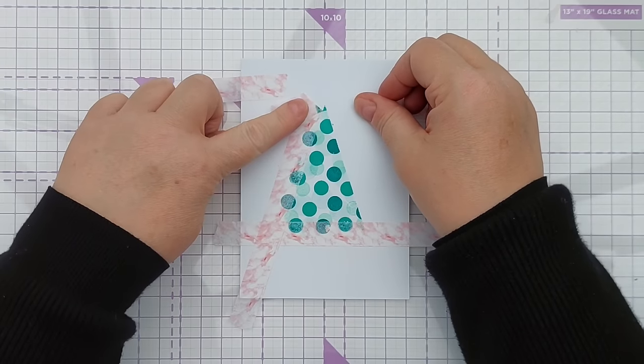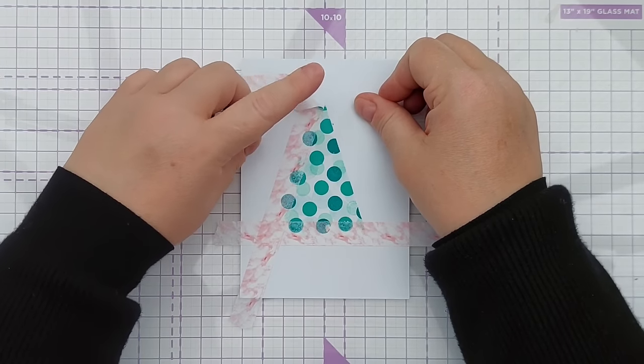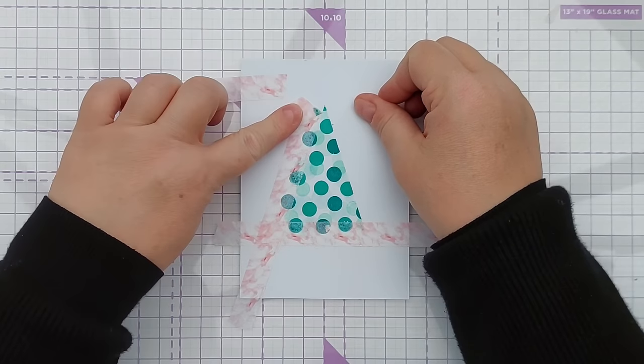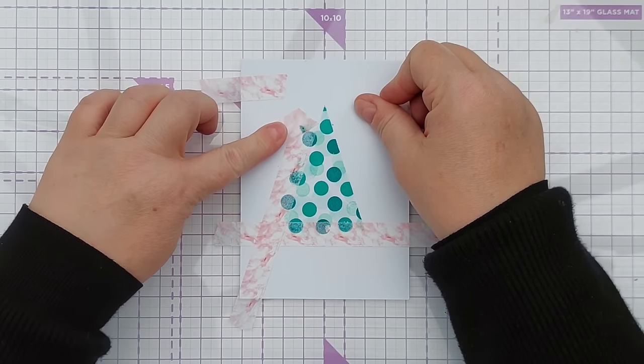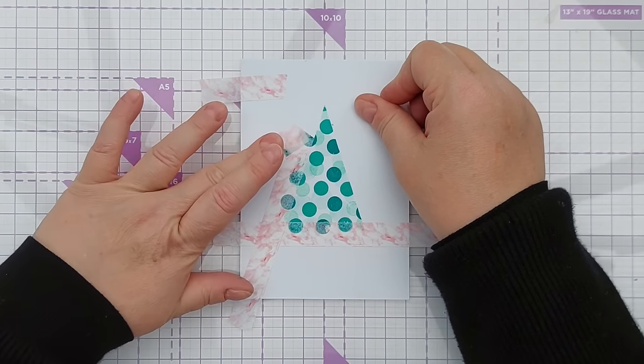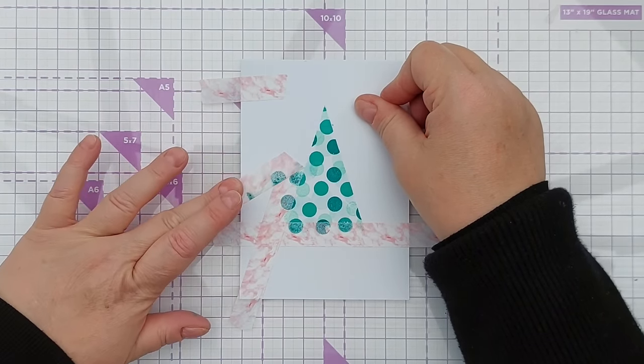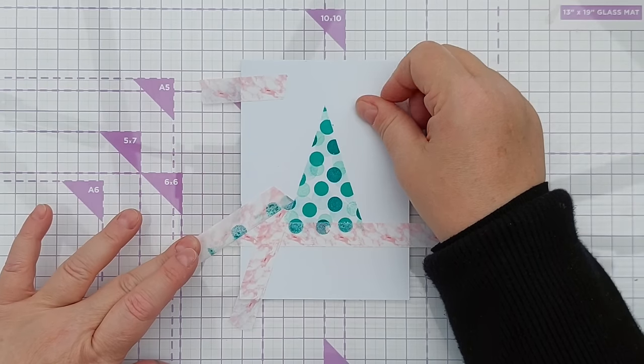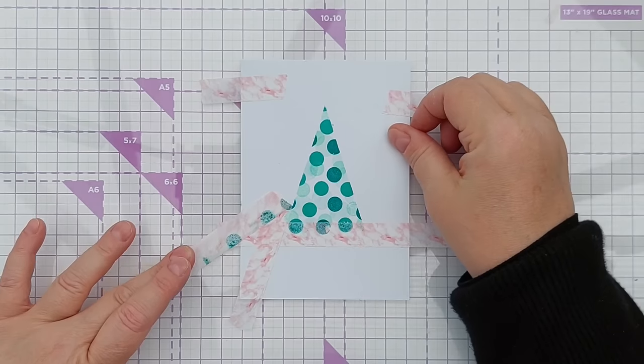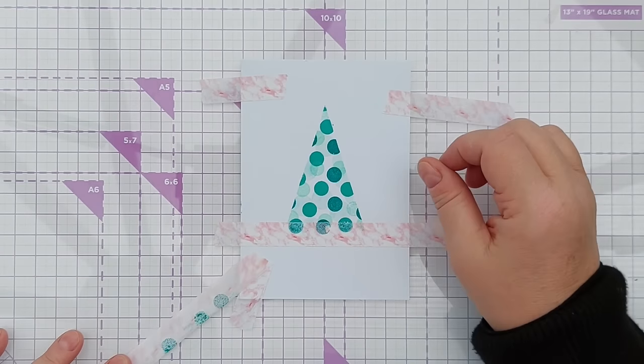When removing tape I like to do it slowly and I fold the tape over so it's flat and pull it away from the image, that way if anything does tear it won't tear the image, it'll just tear around it and you can normally repair that.